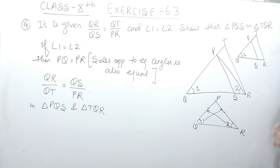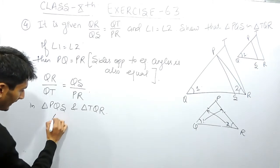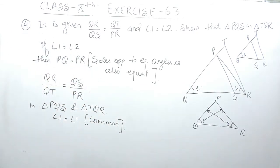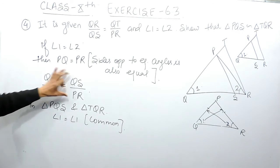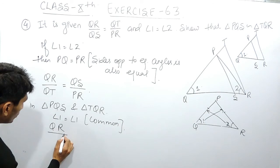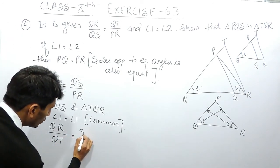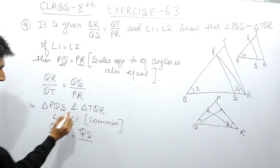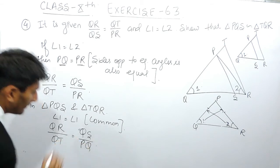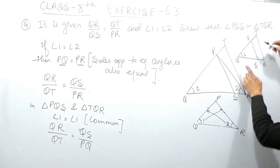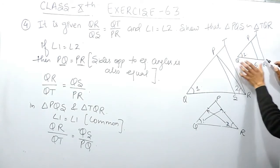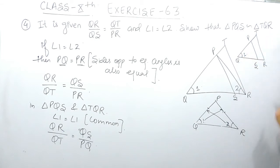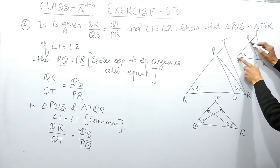Angle 1 will be equal in both the triangles. So we can say that in these two triangles, angle 1 equals angle 1 — this angle is common. So one angle is equal in both the triangles. And this ratio is also equal: the ratio between QR and QT equals the ratio between QS and PR, and since PR equals PQ, we can write PQ instead of PR.